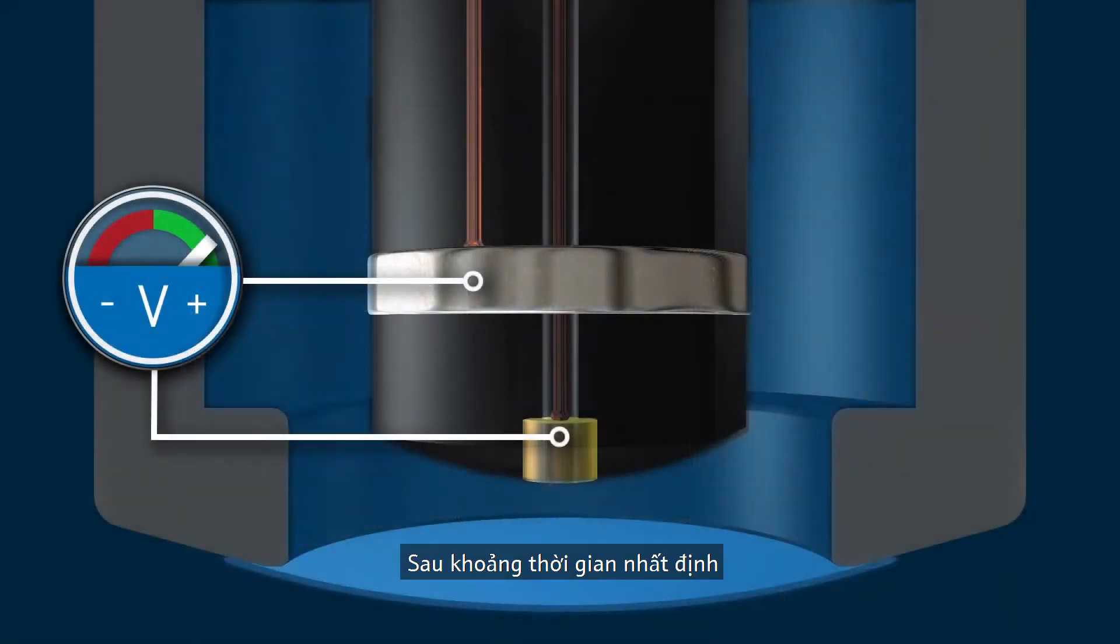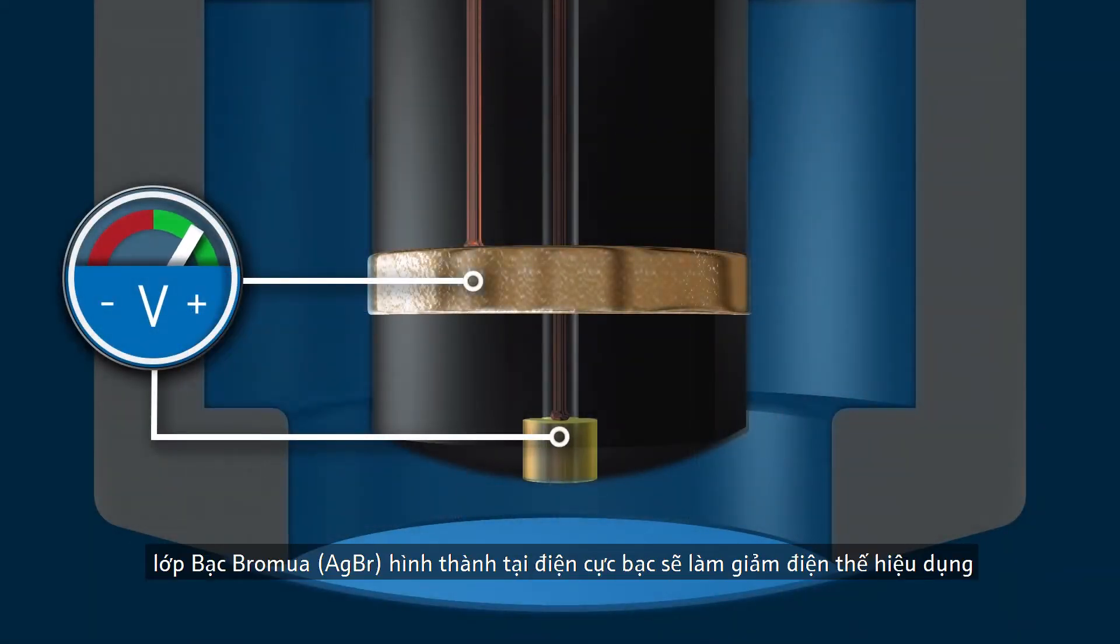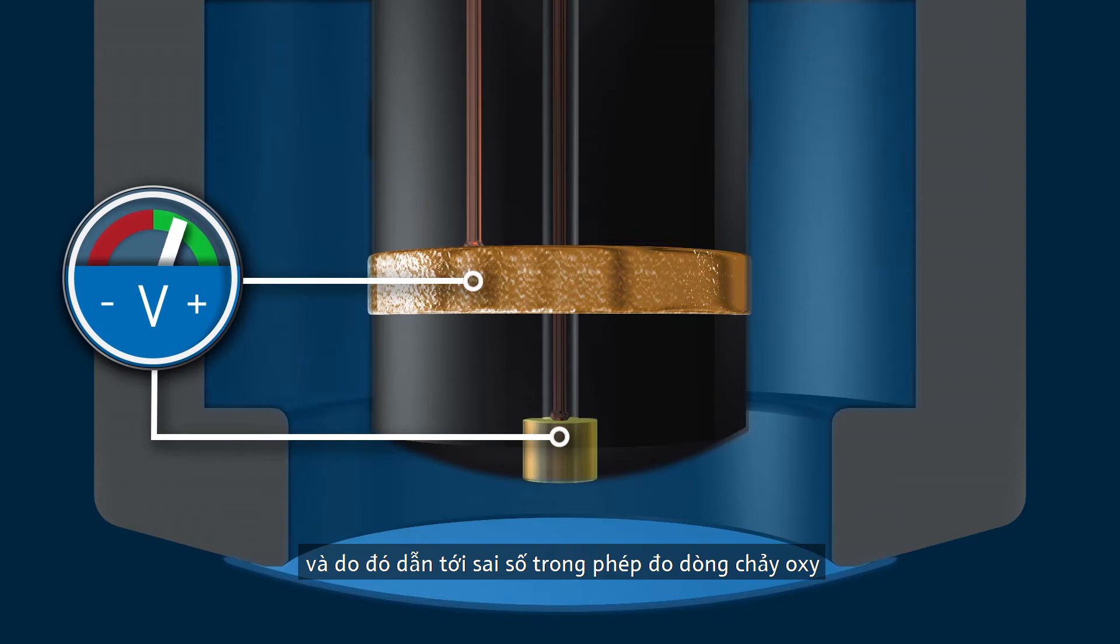After a certain period of time, a silver bromide layer forms on the silver anode. This layer reduces the effective voltage and thus the oxygen flow, which can lead to measurement error in applications with high temperatures during cleaning or sterilization.